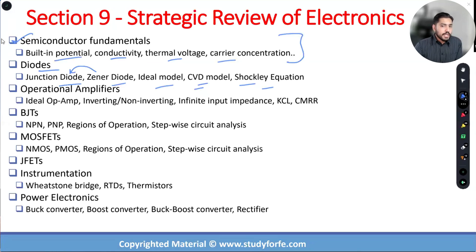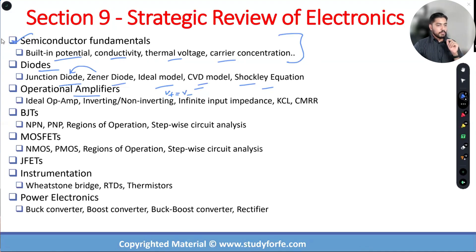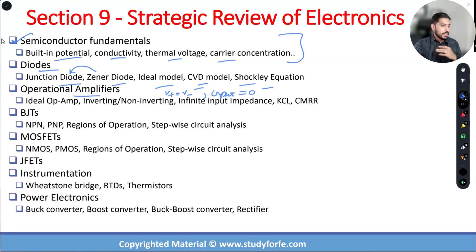Then we have operational amplifiers. The key things for operational amplifiers are: V+ equals V− for an ideal operational amplifier — the voltage at the positive terminal is the same as the voltage at the negative terminal. The input current is always equal to zero because the input resistance is infinite. Combine this with KCL and you will be able to solve practically all ideal op-amp problems, very quickly and very efficiently.